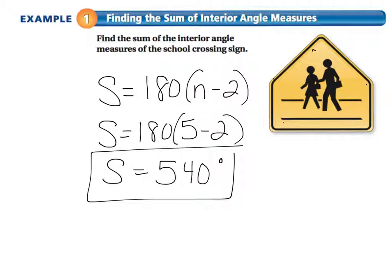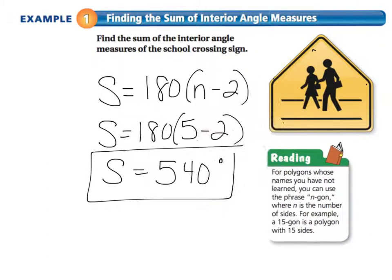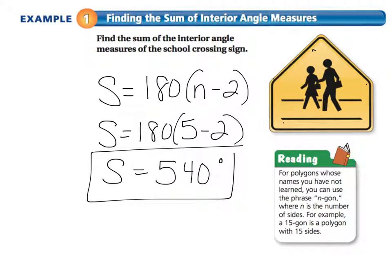Now, there's something we need to make note of, and that's this. This is a pentagon. We know that. But for polygons whose names you have not learned, you can always use the phrase n-gon, where n is the number of sides. For example, we could say a 15-gon is a polygon with 15 sides. If you didn't know this was a pentagon, you could call it a 5-gon. But there are names for them, but if you don't know them, you can just call it by the number of sides.